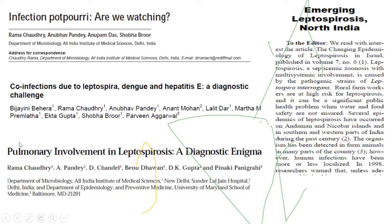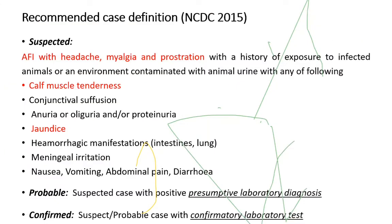Papers show increasing prevalence of leptospira in North India, mainly from New Delhi. The recommended NCDC case definition of leptospira is any febrile illness with headache, myalgia, and prostration with history of exposure to infected animal or environment contaminated with animal urine, with one of the following: calf muscle tenderness, jaundice, hemorrhagic manifestations, renal involvement, or conjunctival suffusion. The probable case is any suspected case with presumptive laboratory diagnosis; the confirmed case is any suspect or probable case with confirmed laboratory test.